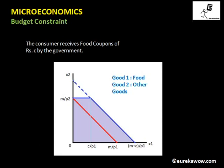Since the consumer receives food coupons and no cash, they cannot consume more than m by p2 units of good two. However, since the consumer can spend rupees c more on food, the income available for food when consuming zero units of x2 becomes m plus c. As a result, the horizontal intercept of the new budget line becomes m plus c by p1.